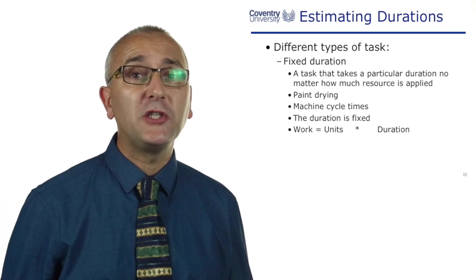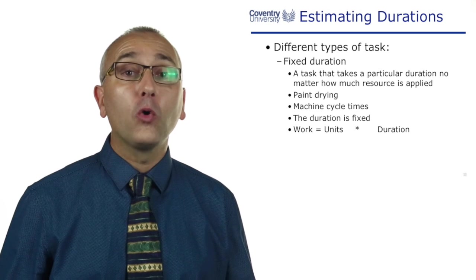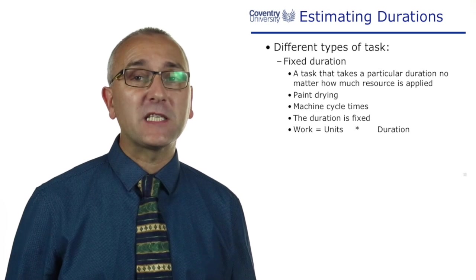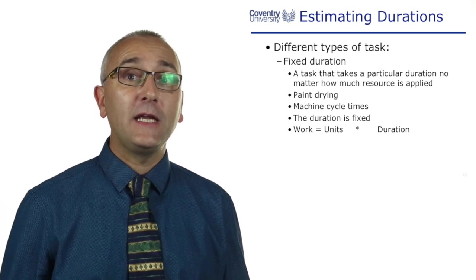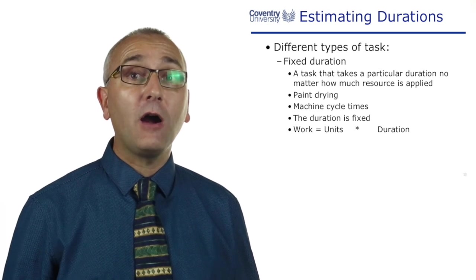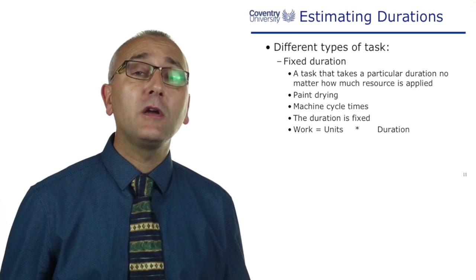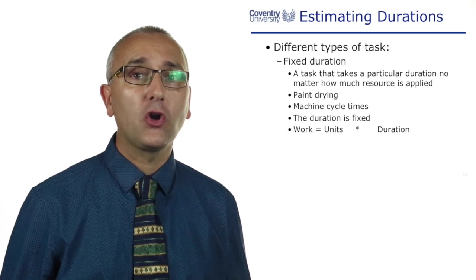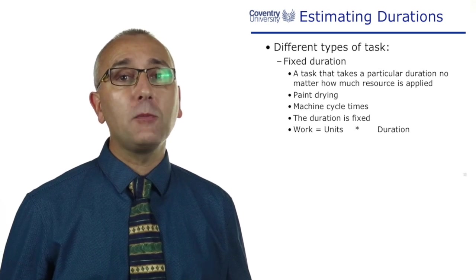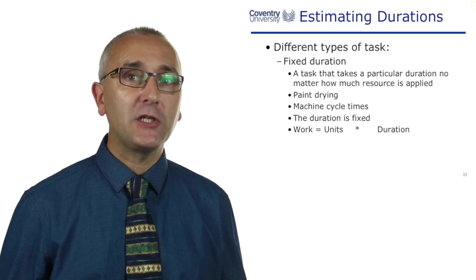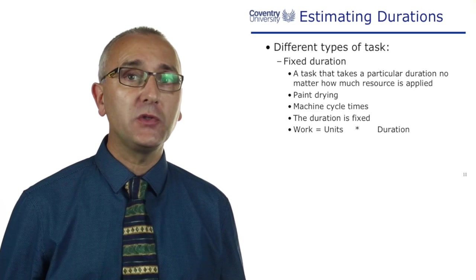Another type of task is the fixed duration task. This little video clip or a lecture runs for a fixed amount of time. If we have two people trying to give the lecture, it doesn't mean the lecture is done in half the amount of time. So some things have fixed duration. Another example: paint drying, a machine cycle time. In these examples the duration is fixed. Adding extra resources to the task will not reduce the duration.